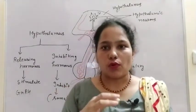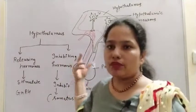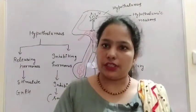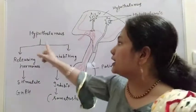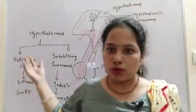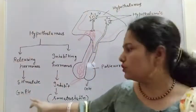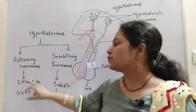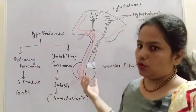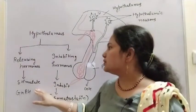GnRH stimulates the pituitary so that the pituitary releases FSH — follicle stimulating hormone — and LH — luteinizing hormone. So GnRH, the gonadotrophic releasing hormone, stimulates the pituitary to release these hormones from the pituitary so that the gonads are activated.